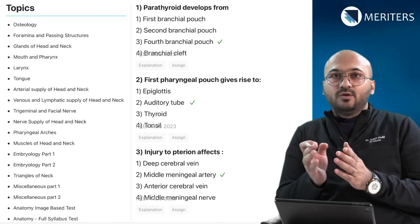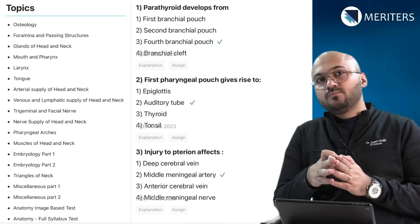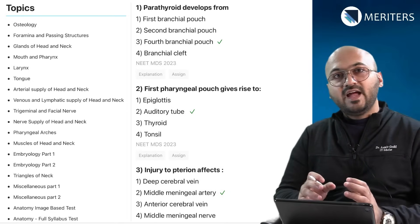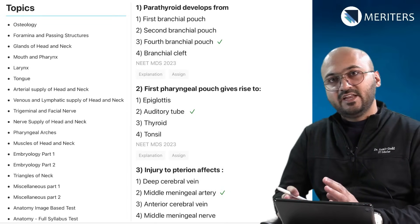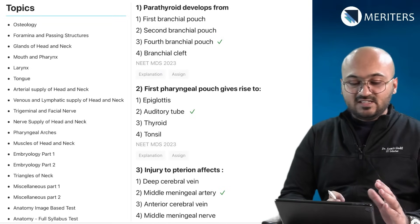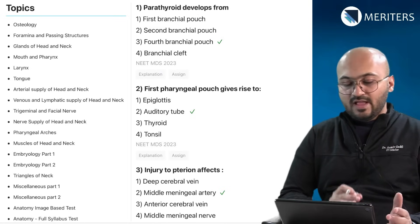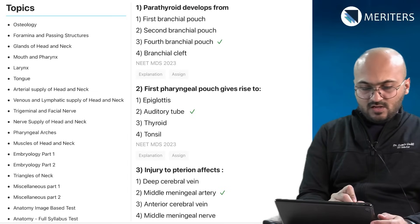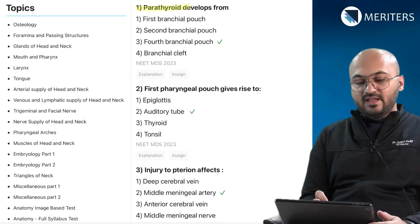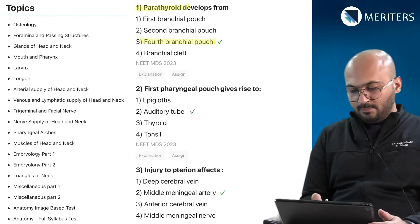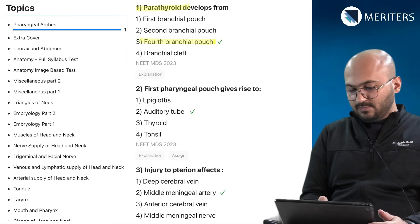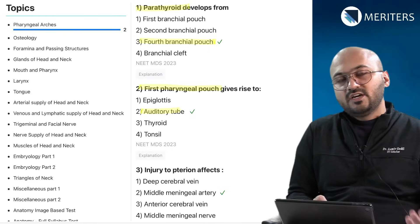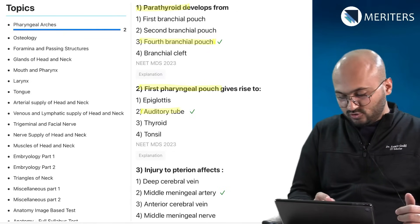To decide which topics are more important versus which can be taken as a second priority, we will assign questions from previous NEAT MDS exams to topics on the left, and while doing that we will realize which topics are more commonly asked. Let's start with parathyroid — its development is from the fourth brachial pouch. The first pharyngeal pouch gives rise to auditory tubes, so the different structures derived from different pharyngeal arches and pouches are important.